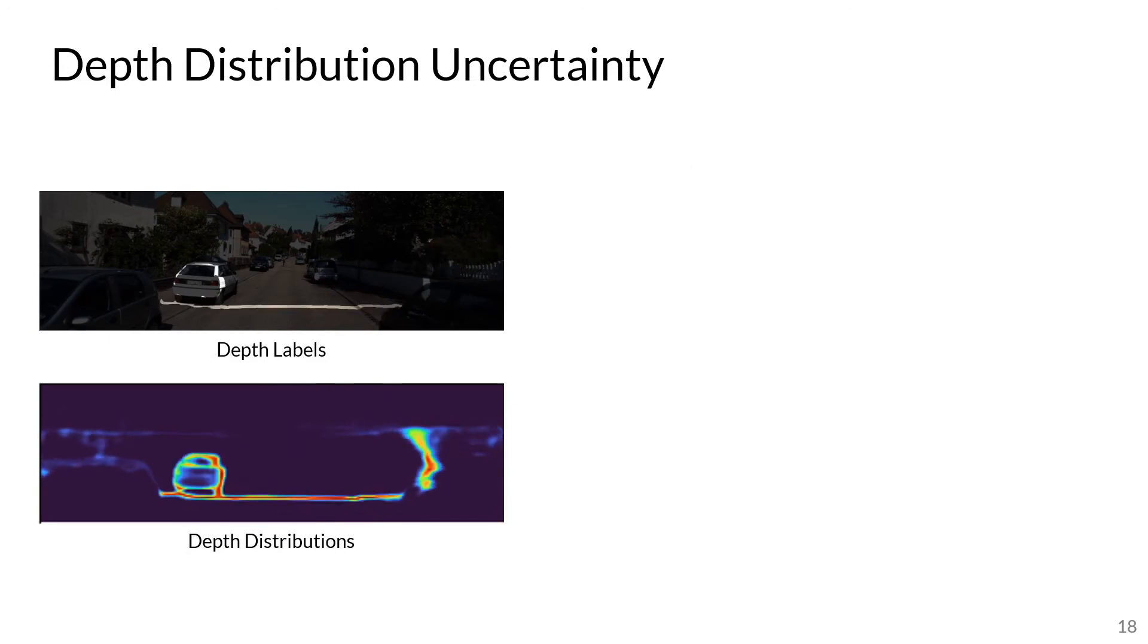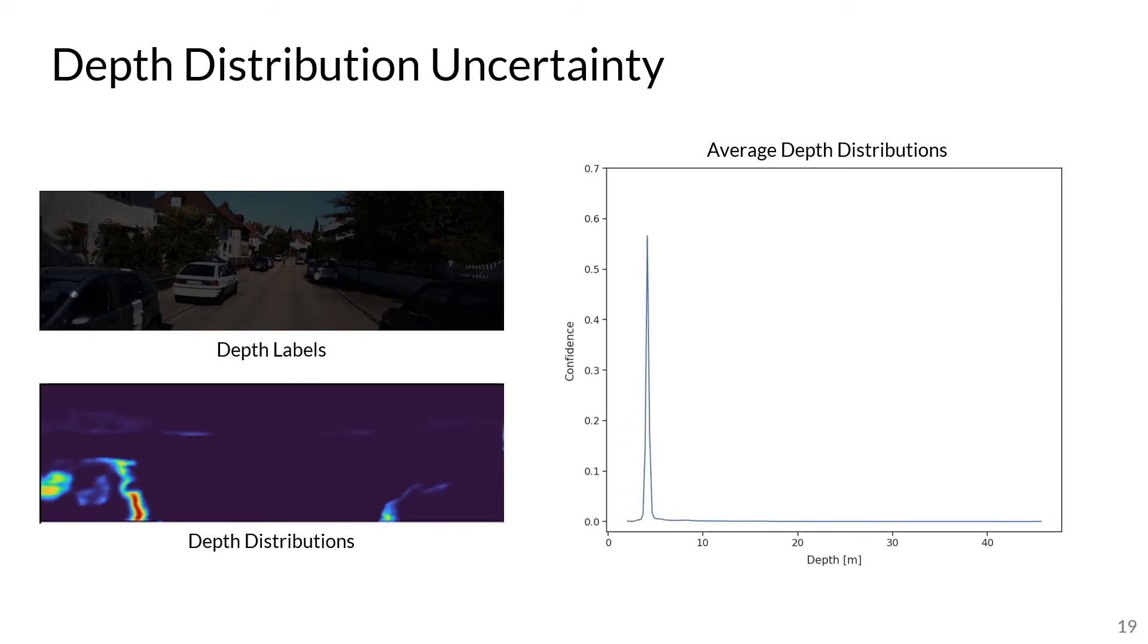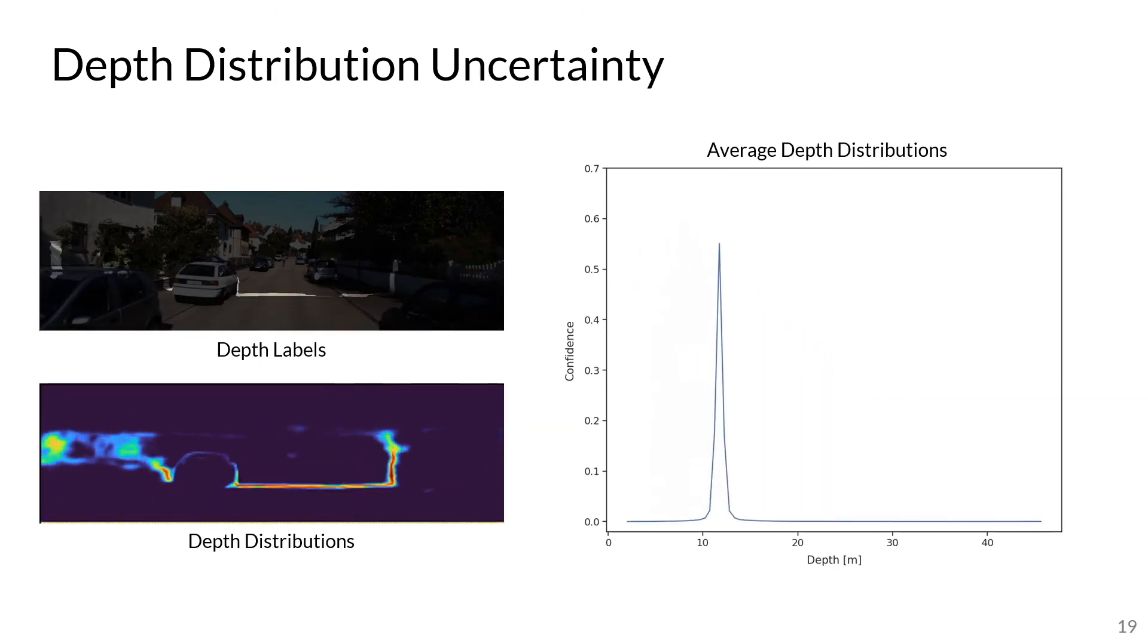Finally, we visualize the depth distributions, where brighter colors indicate higher probabilities. We also visualize the average depth distributions at each depth bin. We can see that the distributions become wider as a function of depth, and the depth probabilities also reduce as well. This is expected behavior, as it reflects the increased difficulty of depth estimation at longer ranges.